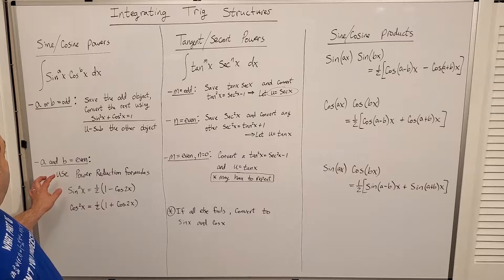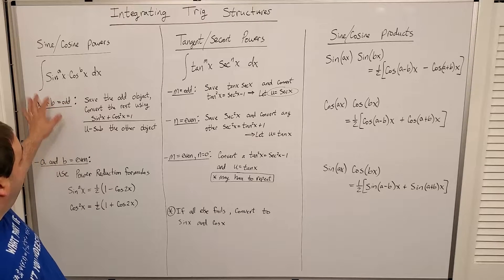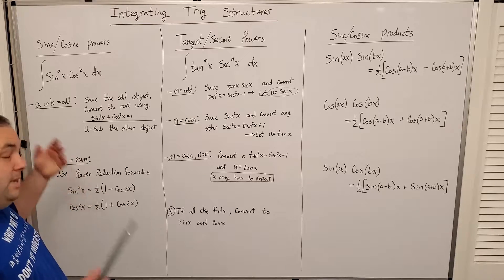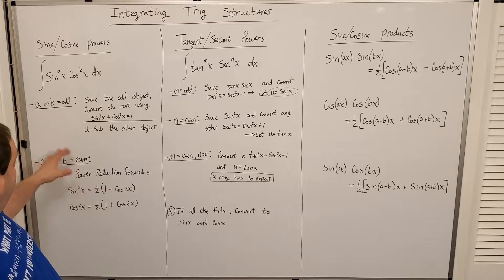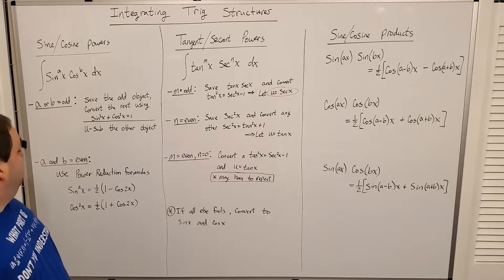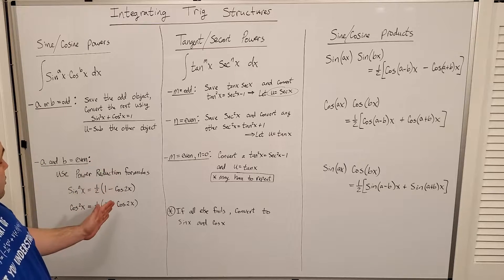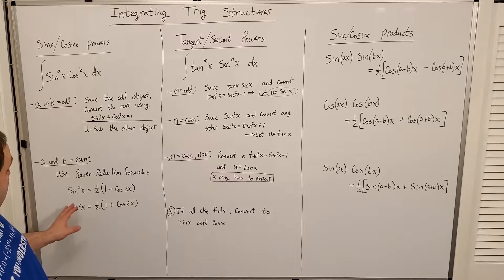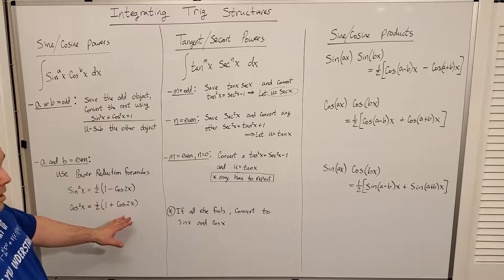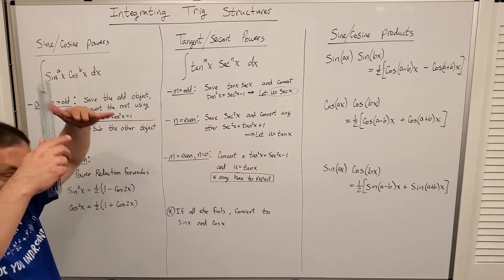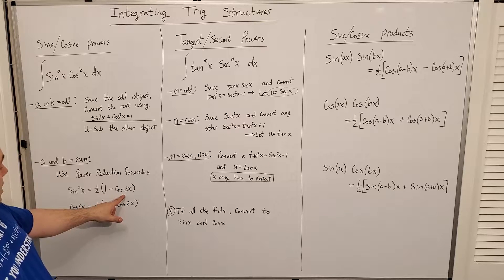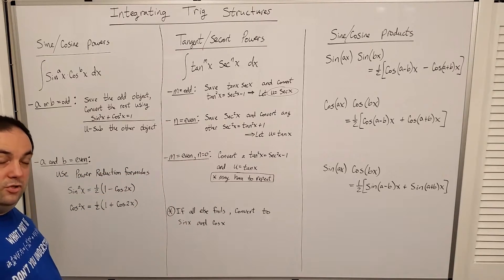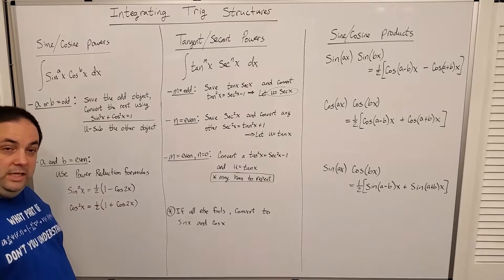If any of the powers are odd, you can do that, and that covers most of them. But in the chance that both exponents a and b are even — and by the way, these can be negative or fractional powers — then you're going to want to use the power reduction formulas. Sine squared equals one-half times (1 minus cosine 2x), and cosine squared equals one-half times (1 plus cosine 2x). You're going from a sine squared down to a cosine, and it does make several terms to integrate, but it makes it easy to deal with the individual pieces.